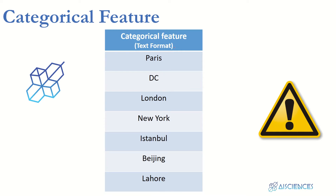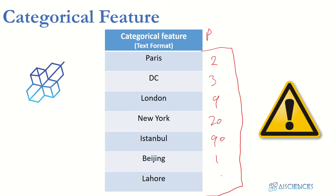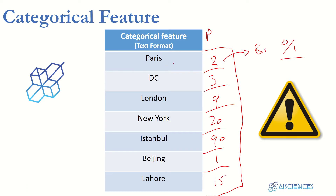What are categorical features? In a dataset, sometimes you come across columns with numeric values like population — for example, 2, 3, 9, 20, 91, 15. Computers can easily understand these numeric values by converting them to binary (0s and 1s). But for machine learning, we cannot feed values that are not integer or float — non-numeric values, in other words, values that are in text or category format.